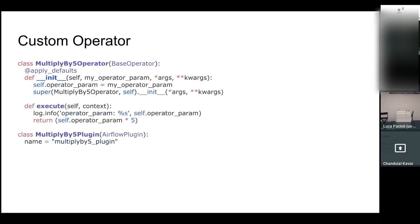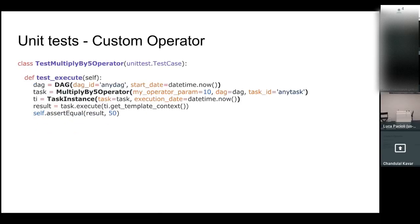For the custom operator we have written, whatever the logic is in the execute method, we want to test that execute method. What I did here is create a sample DAG, add the multiply-by-five operator to the DAG, and then create a task instance. If I execute this task instance using a value of 10, then it should return 50. This is how you can add all your tests to verify your operator logic or custom sensor logic.